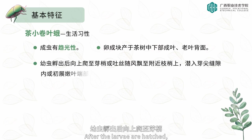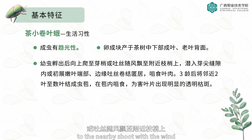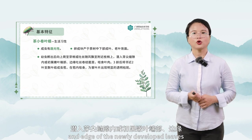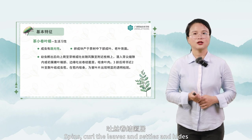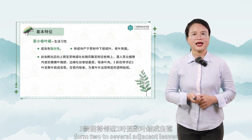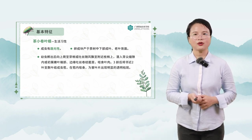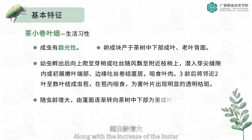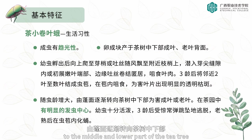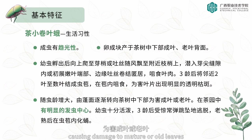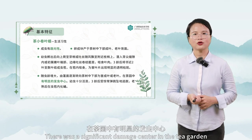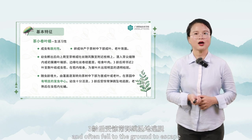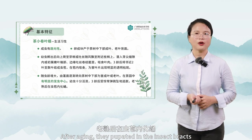After the larvae hatch, they climb up to the shoot or float by laying silk to nearby shoots with the wind, sneak into the shoot tip, gap, or the end and edge of newly developed leaves, then spin and curl the leaves to hide. After the third instar, each larva forms two to several adjacent leaves into insect bracts, eating inside and causing obvious transparent withered spots. As the instar increases, larvae move from the canopy surface to the middle and lower part of the tea tree, damaging mature or old leaves. There is a significant damage center in the tea garden. Larvae are very active and, when startled after the third instar, often fall to the ground to escape. After aging, they pupate inside the insect bracts.